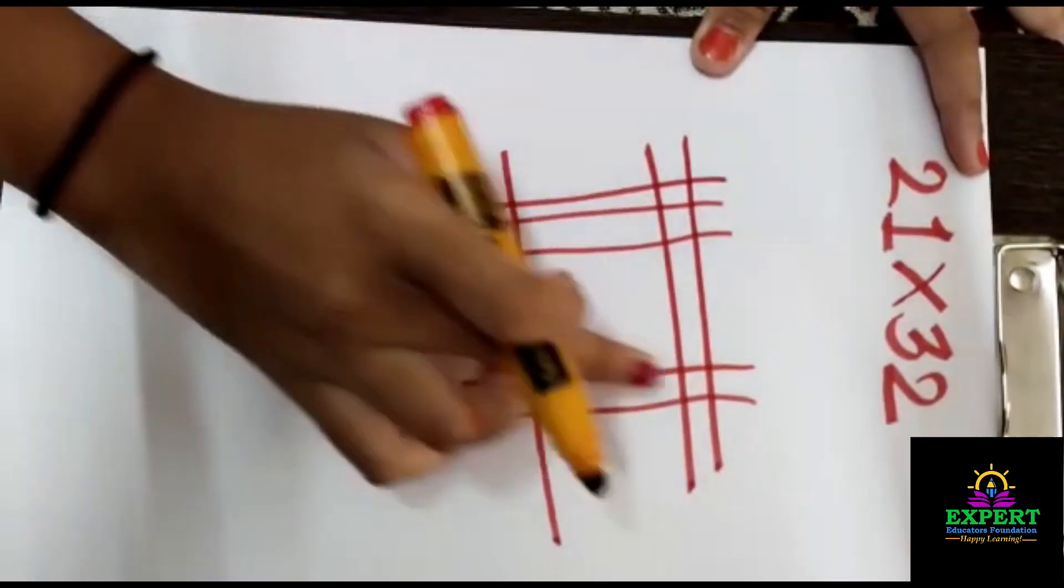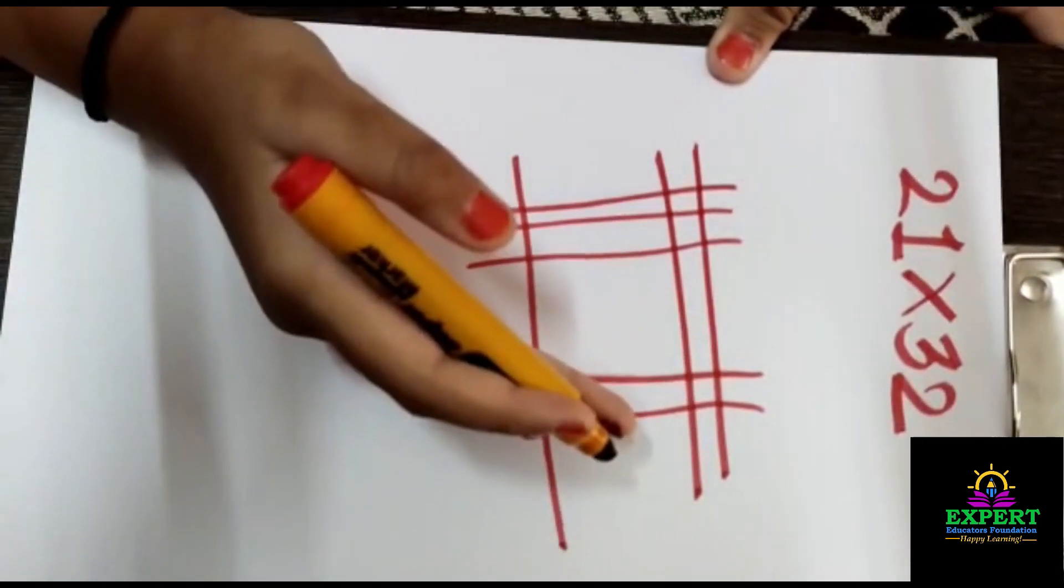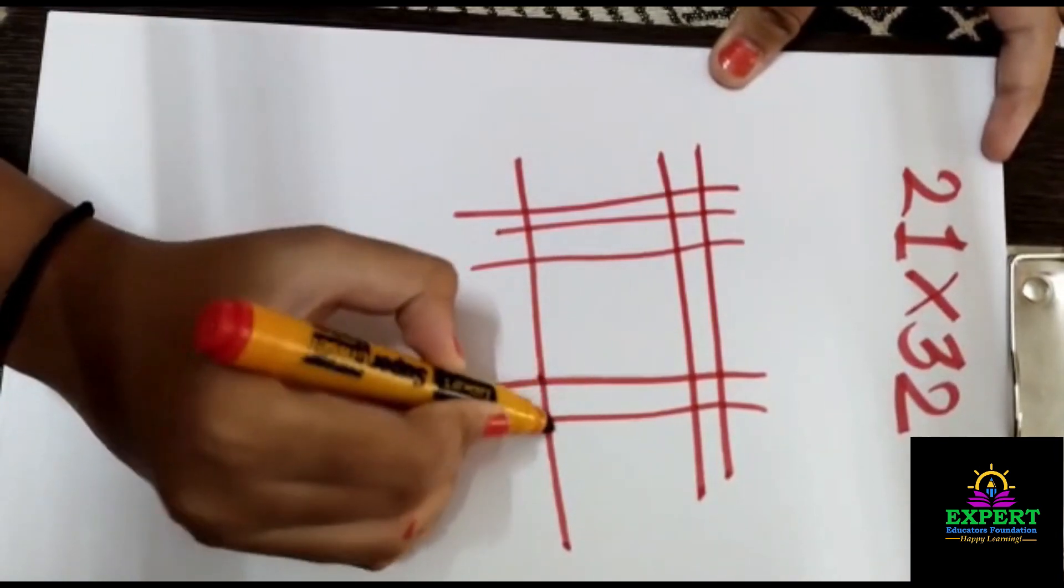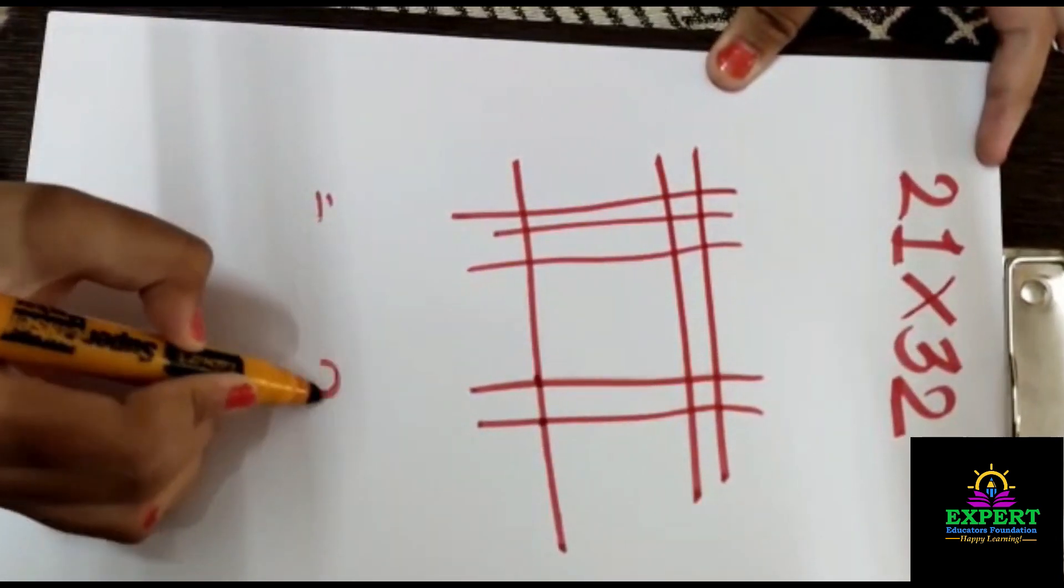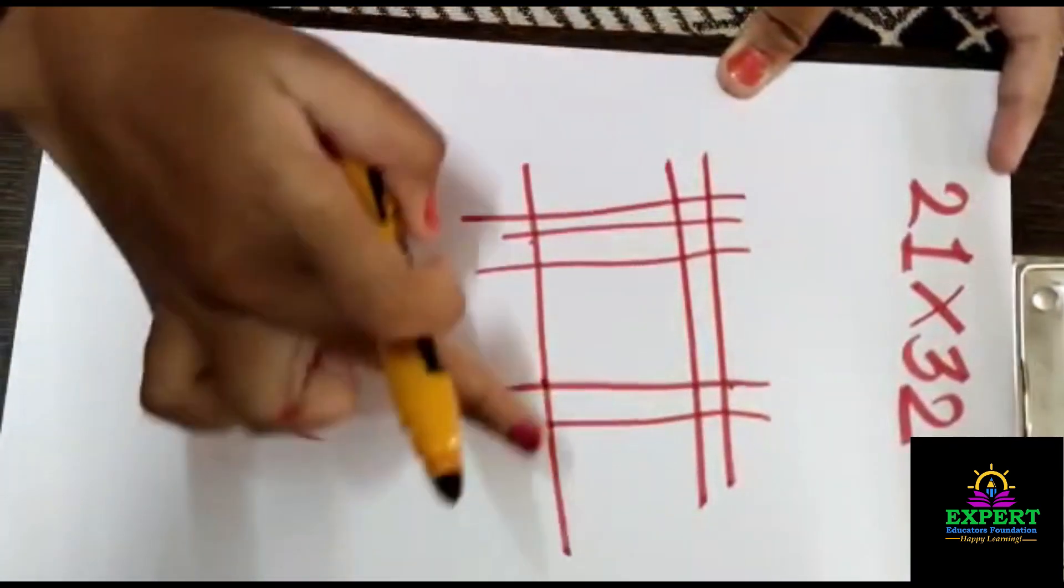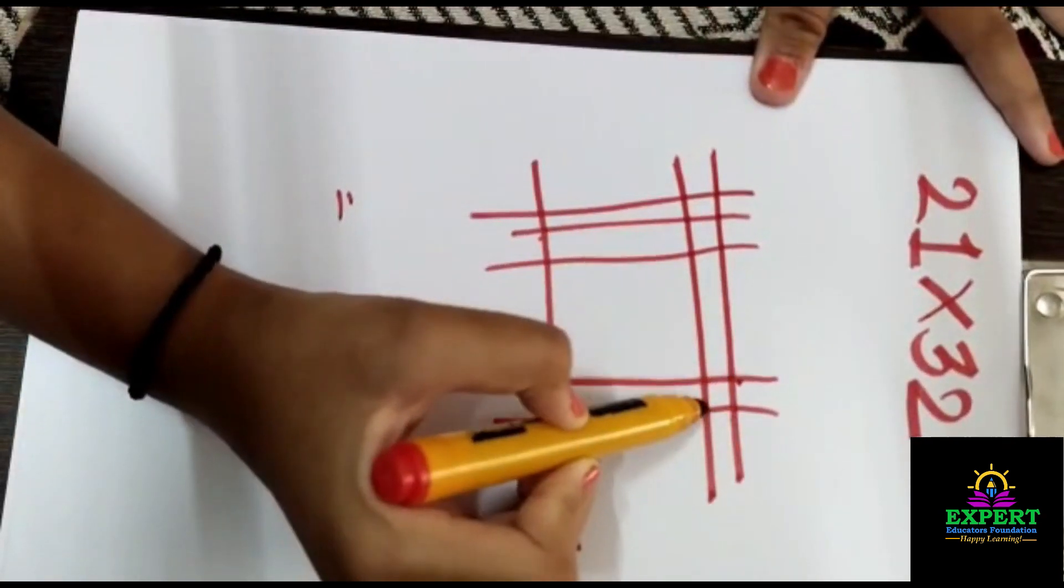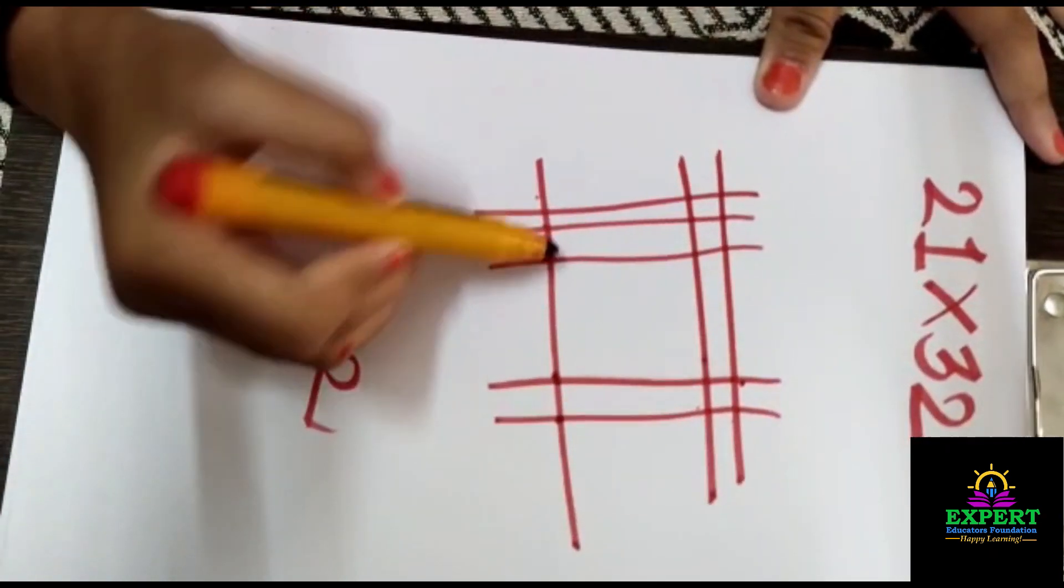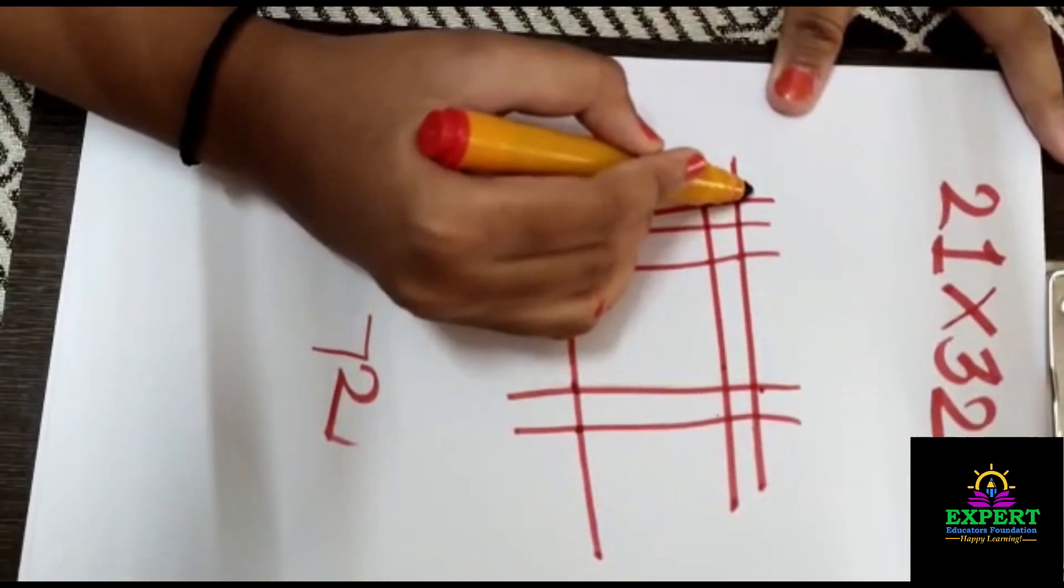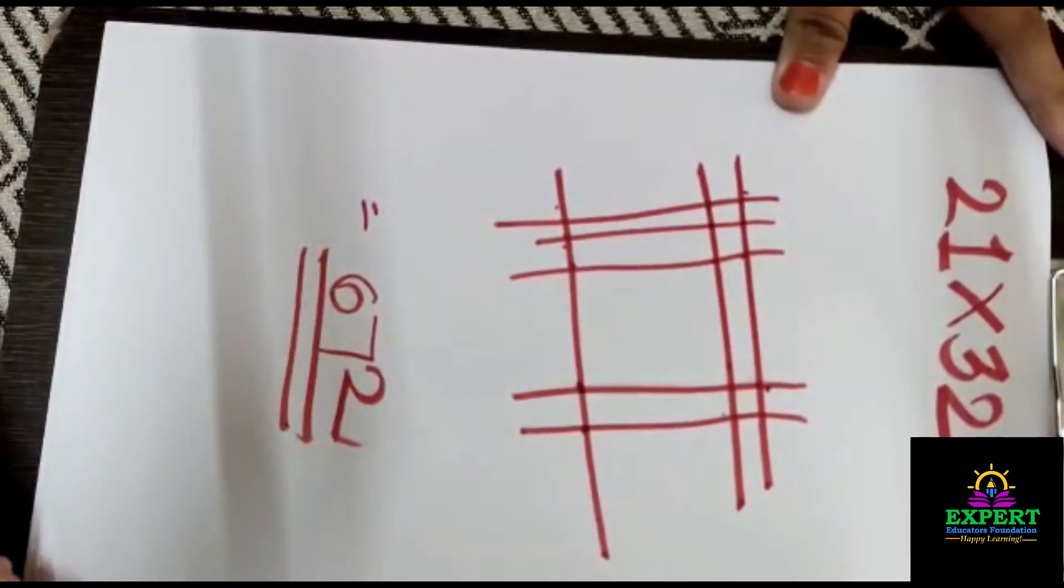Here the number is 2, so again we will make here two lines separately. Now we will count the intersecting points, starting from the right side. For example, one, two - here two lines are intersecting, so we will write 2. Next we count like this: one, two, three, four, five, six, seven. So here we write 6. The answer is 672.